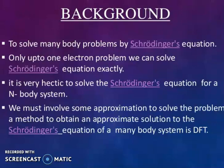Let us focus on background to solve many body problems by Schrödinger equations. Only up to one electron problem we can solve Schrödinger equation exactly. It is very hectic to solve the Schrödinger equation for an n-body system. We must involve some approximation to solve the problem. A method to obtain an approximate solution to the Schrödinger equations of many body system is DFT.